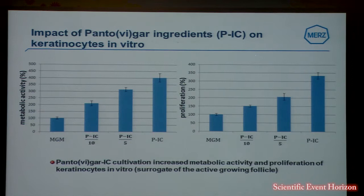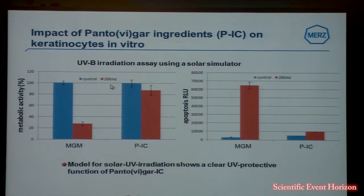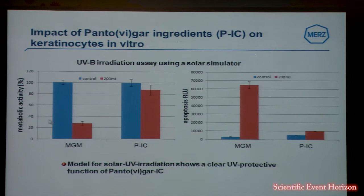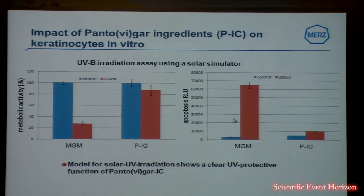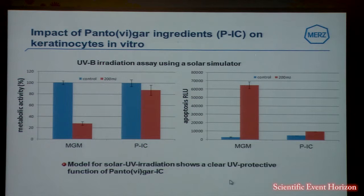We could clearly show that metabolic activity as well as proliferation is clearly increased by increased PIC concentration. Furthermore, we could show that after 200 millijoule UV radiation using a solar simulator, the metabolic activity of the MGM-cultivated cells is dramatically decreased and the amount of apoptotic cells is dramatically increased. Whereas in the PIC situation, only a small decrease in metabolic activity and only a small increase in apoptotic cells could be detected. So we conclude that our PIC is able to protect our keratinocytes from UV irradiation.